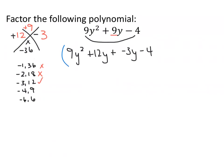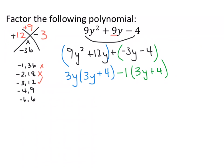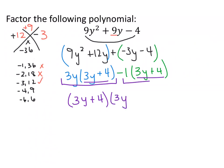Now we factor by grouping. Looking at the first pair, 9y² + 12y, we can factor out 3y, leaving 3y(3y + 4). Looking at the back pair, -3y - 4, we factor out -1, leaving -1(3y + 4). Since both groups match with (3y + 4), we factor that out as a common factor, giving us (3y + 4)(3y - 1) as the final answer.